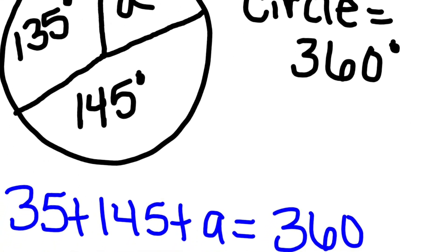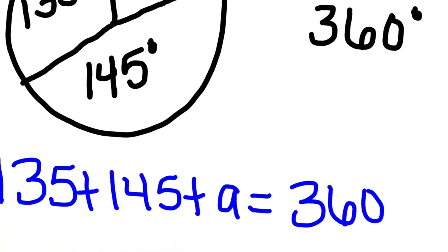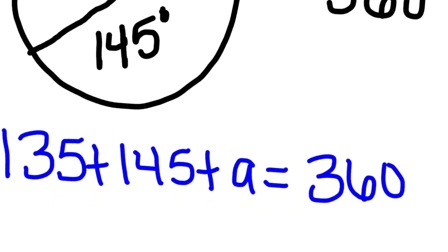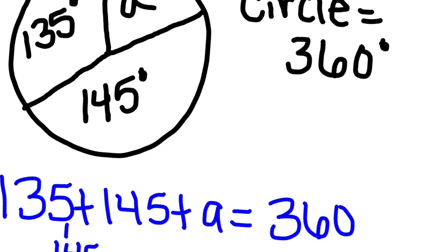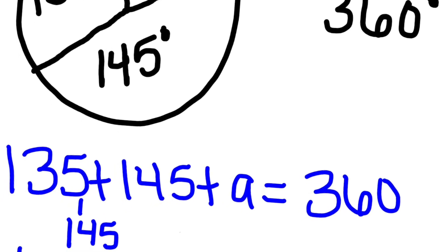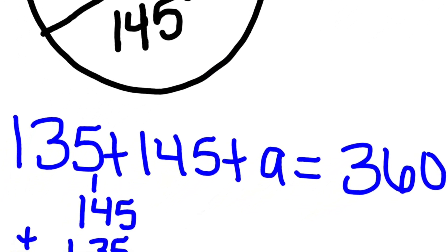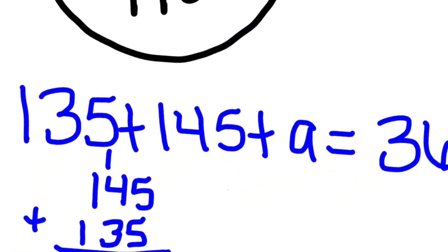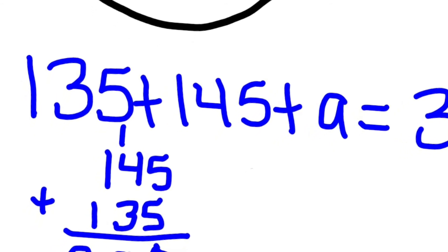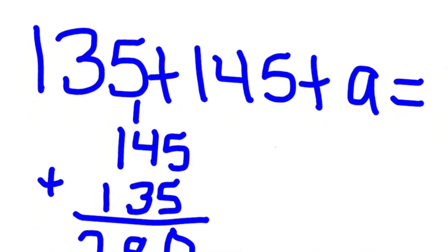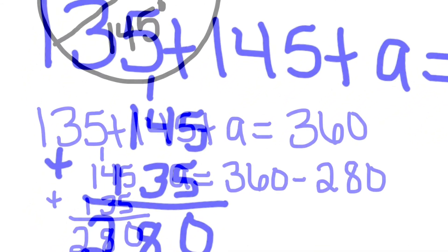So what that tells me is that I need to add all three angles together and it needs to equal 360 degrees. So I'm going to start by adding 135 plus 145. When I add those two angles together, that tells me that I'm going to have 280 total degrees.